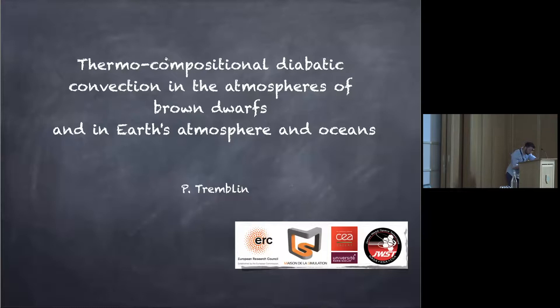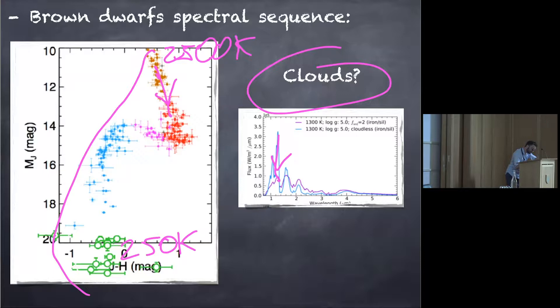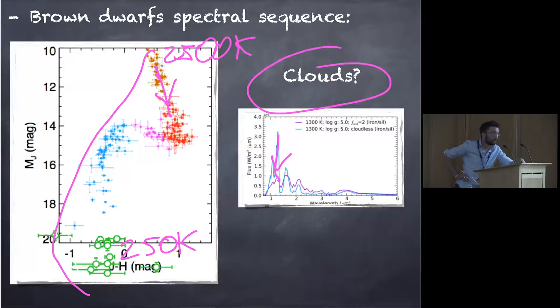On the left, I show a color magnitude diagram of brown dwarfs that Jeremy showed. Typically, if you look at brown dwarfs in this diagram, you have hundreds of objects, and if you go at the high top of the diagram, you have a temperature of 2,500 K objects down to 250 K at the bottom.